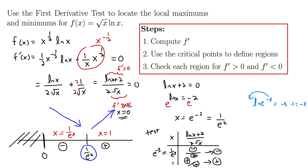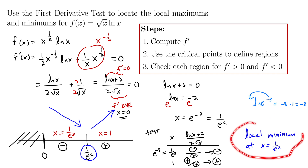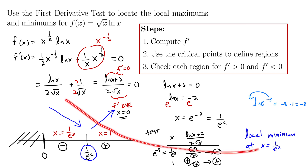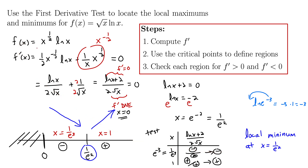So we just write it out: local minimum at x = 1/e². The problem doesn't even ask us to determine the value of that local minimum. If it did, we would plug x = 1/e² into the original function — not the derivative — to get the y-value for the local min. But luckily, we don't need that here. Local minimum at x = 1/e² is our final answer using the first derivative test.